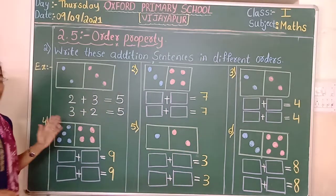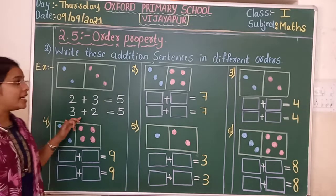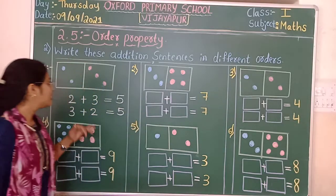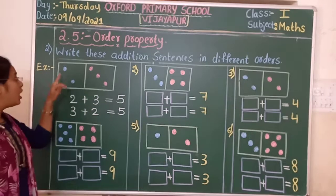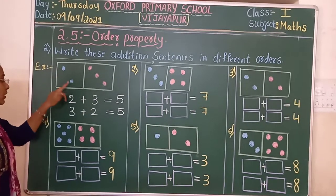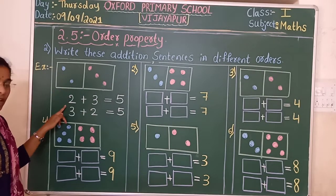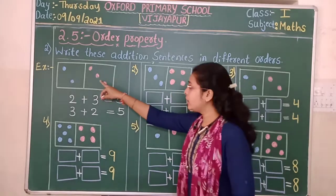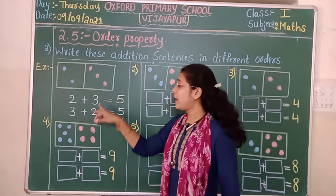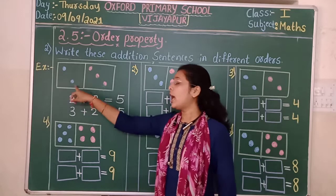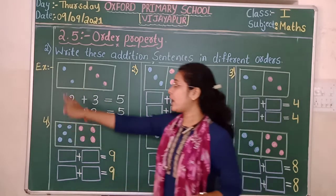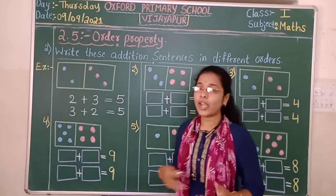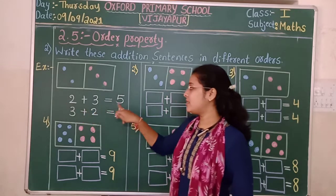With the first example, I will show you how to write the addition sentence and find the different orders. We have two dots in the first block and three dots in the second block. So, as it is, the first addend is two dots and the second addend is three dots. That means two plus three equals five.